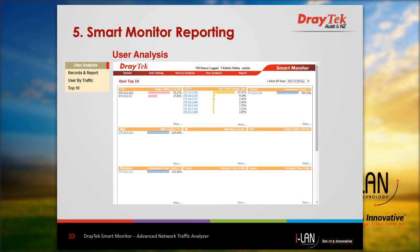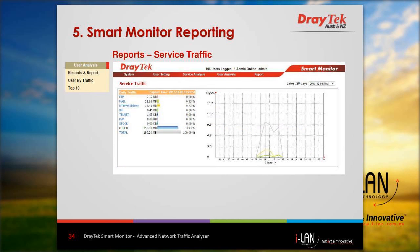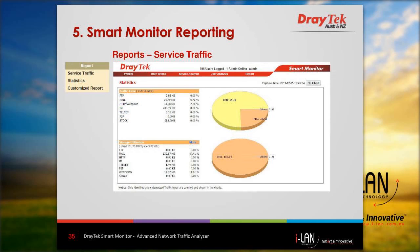Under user analysis, you can also see who the top 10 users are. Clicking the top 10 menu option displays the top 10 users with various categories based on application type. You can click on a user to get more details on which internet sites they visited and the amount of data downloaded. The reporting section of Smart Monitor provides historical reports of monitored traffic, including a traffic report for a 24-hour period showing a bar graph for total usage and an hourly breakdown by traffic type. A statistics report is also displayed as a pie chart showing the proportion of each traffic type.